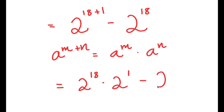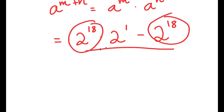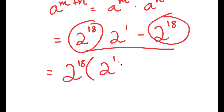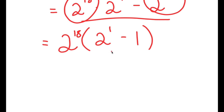And now I have this minus 2 to the power of 18. Because I have two terms that are the same, I can factor out 2 to the power of 18. So I get 2 to the power of 18 times — 2 to the power of 18 times 2 to the power of 1 divided by 2 to the power of 18 is simply 2 to the power of 1, and negative 2 to the power of 18 divided by 2 to the power of 18 is negative 1. So I get 2 to the power of 18 times (2 to the power of 1 minus 1).